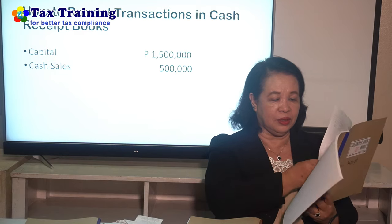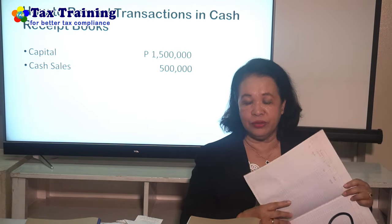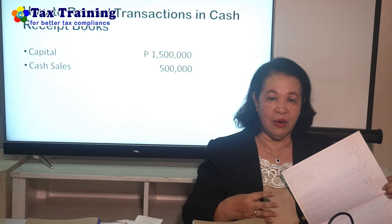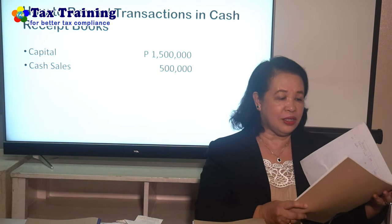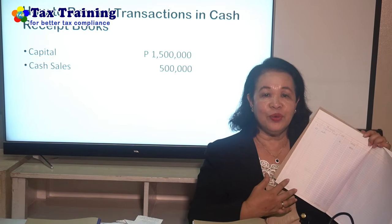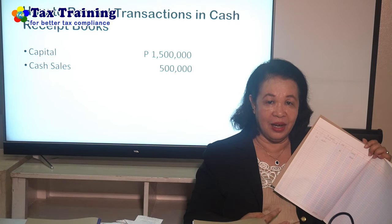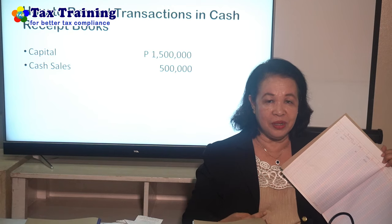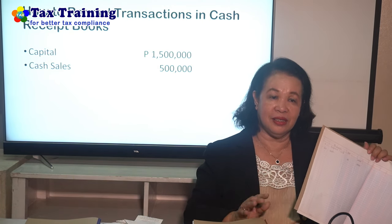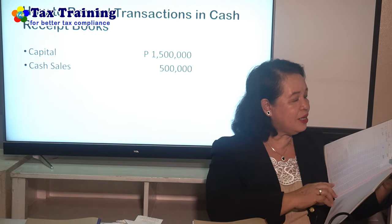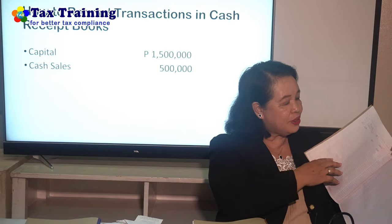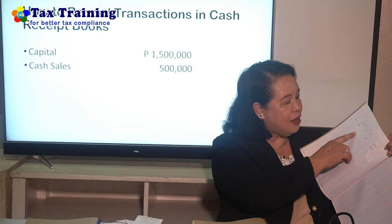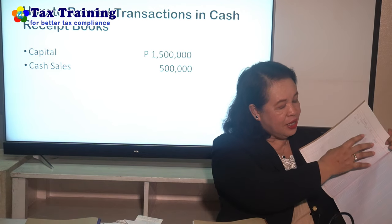We start with the cash receipt book. In this example, I have a business — IMCAN General Merchandise. My example is during June, I have two cash receipts. The first is when I received cash from investing capital of 1,500,000. The second is during the month, I received sales from my customers of 500,000. Those are the two cash receipt transactions. So June 1, capital 1,500,000 is recorded, and June 5, sales of 500,000.